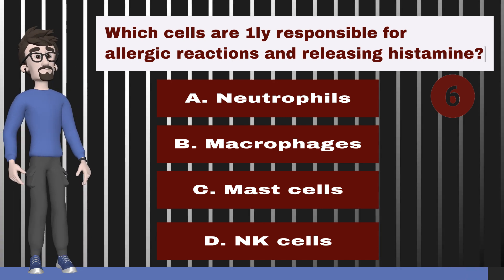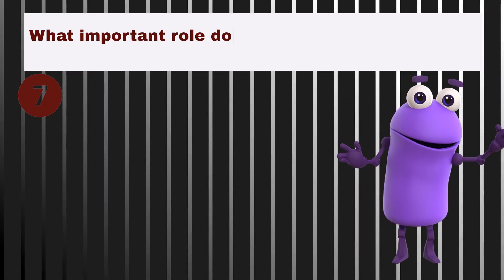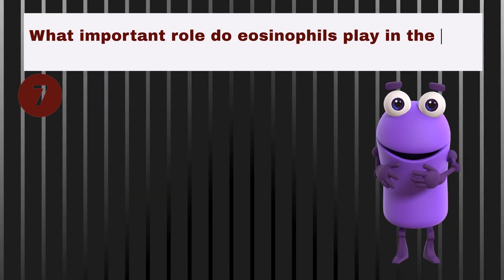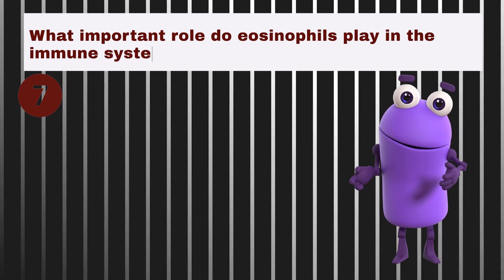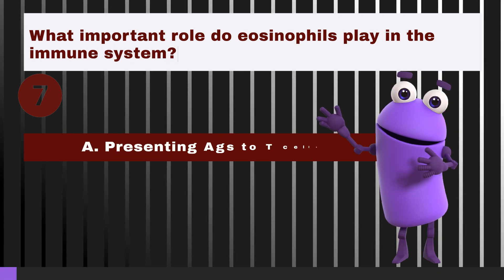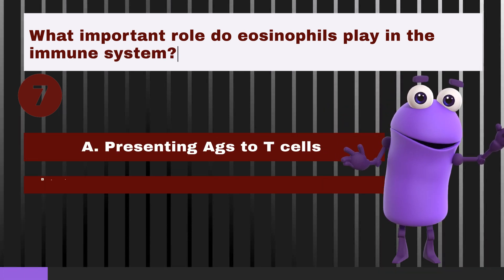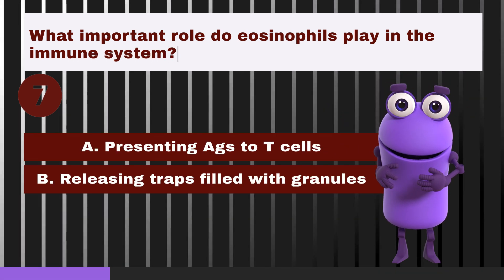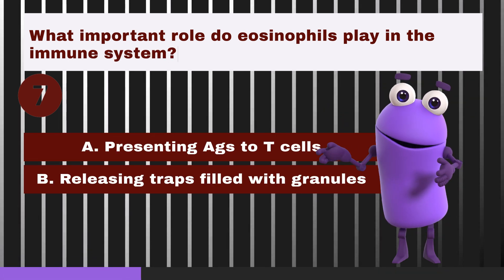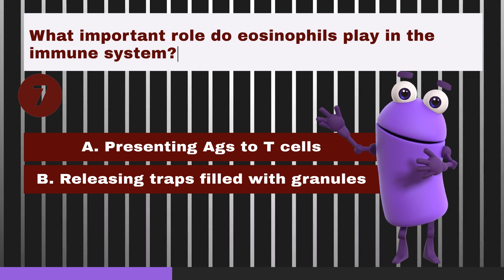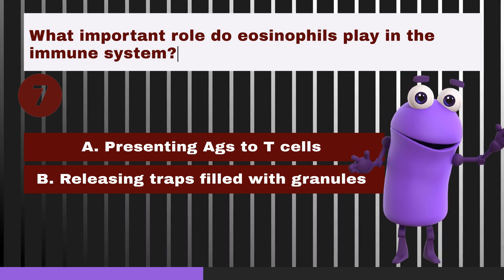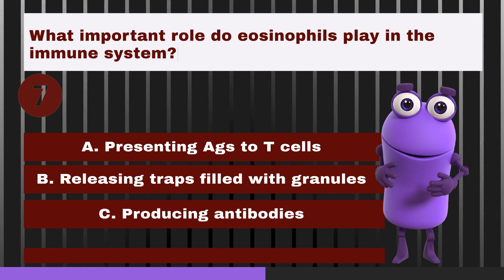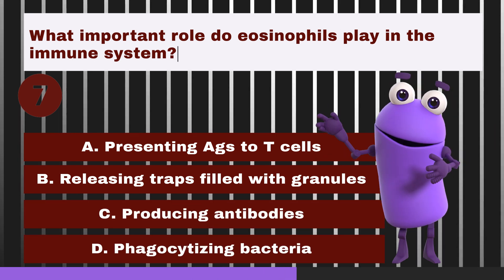What important role do eosinophils play in the immune system? A. Presenting antigens to T cells. B. Releasing extracellular traps filled with granules. C. Producing antibodies. D. Phagocytizing bacteria.